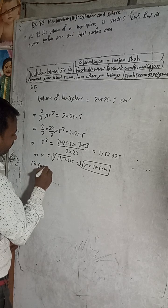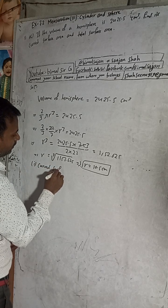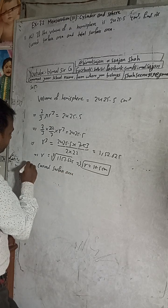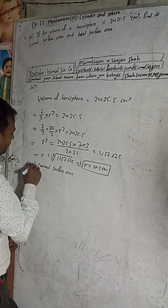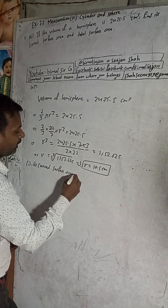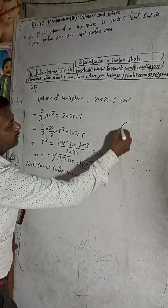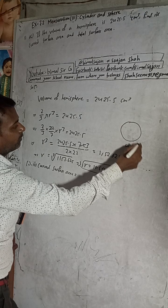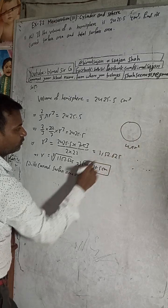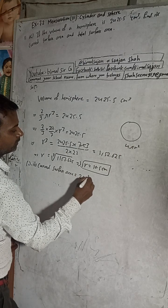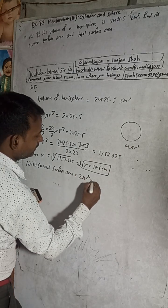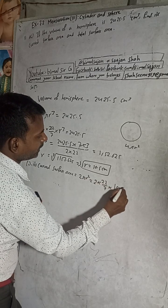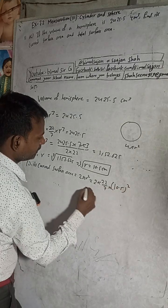Now we need to find the curved surface area. The curved surface area formula for a hemisphere is 2πr². This is the curved part. So it will be 2 times 22/7 times 10.5 squared.